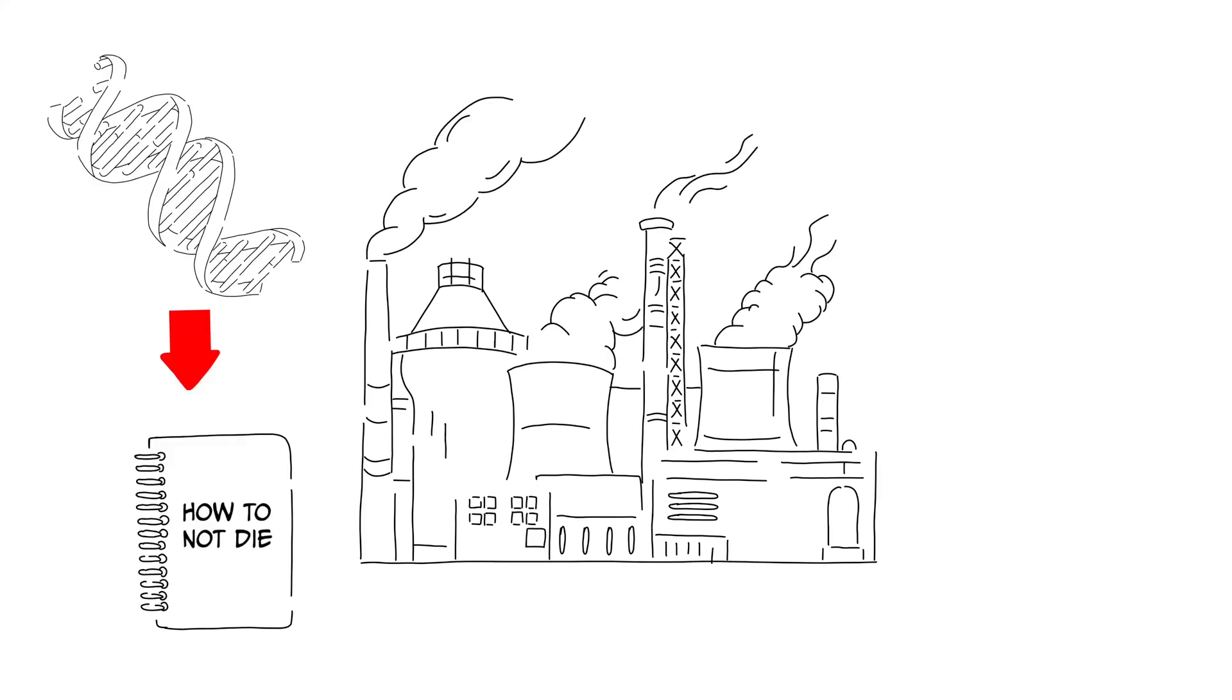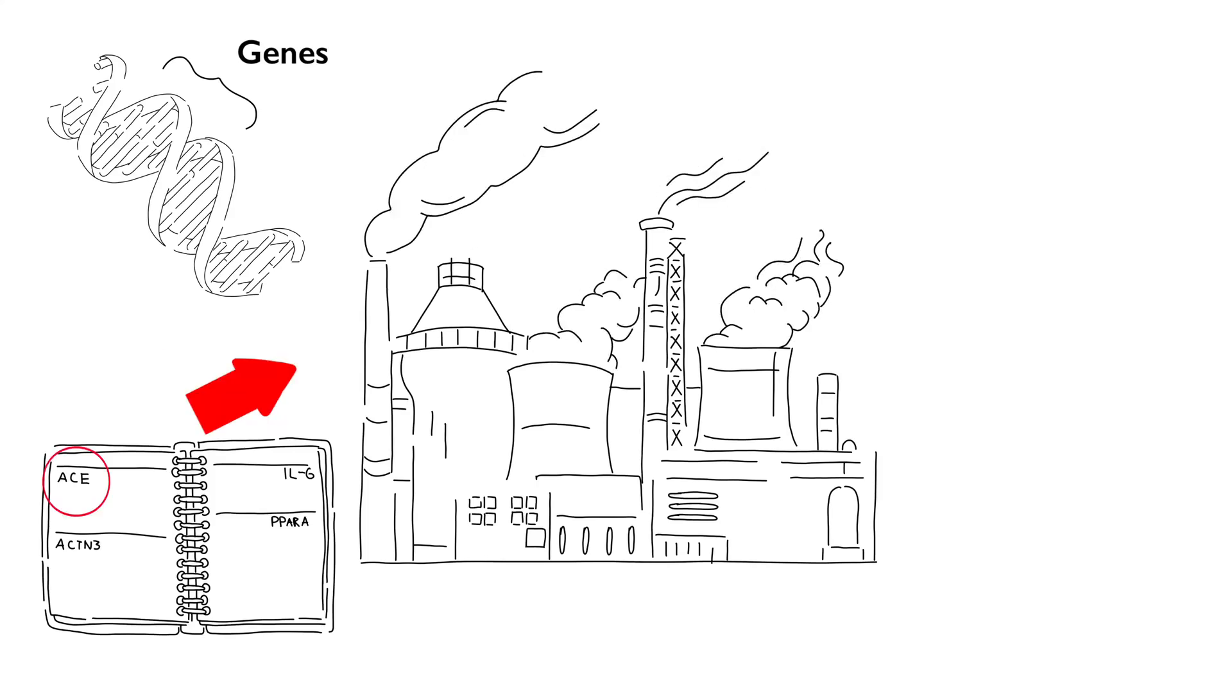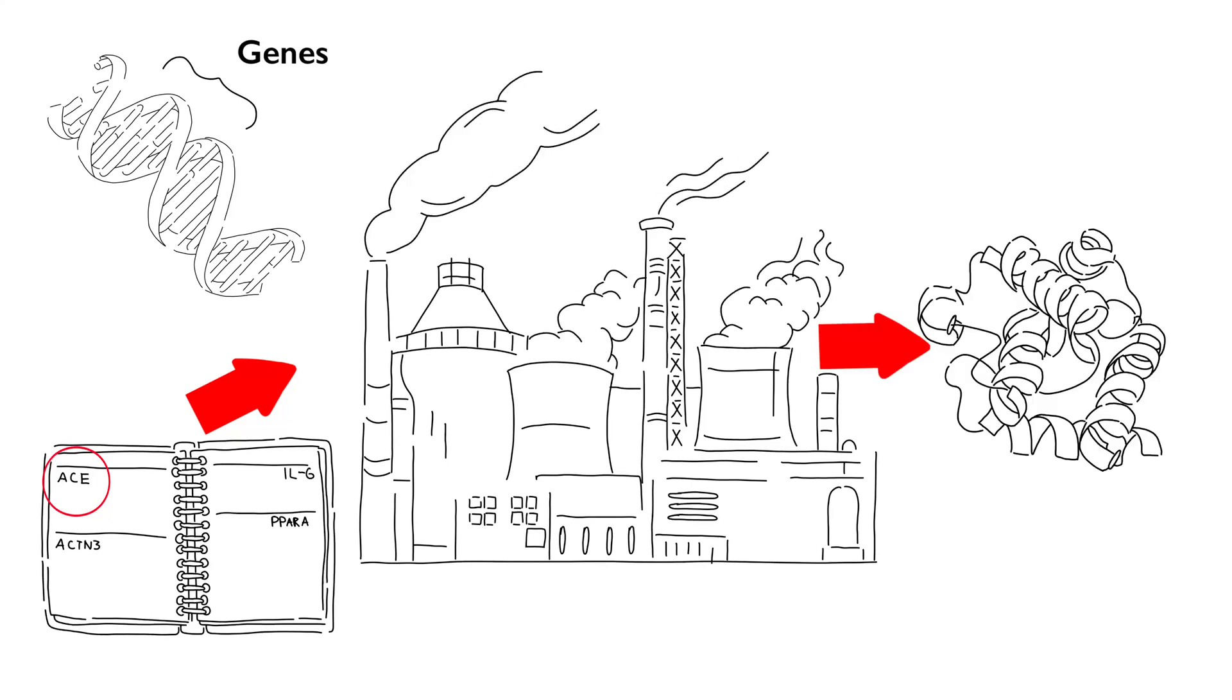Your body is like a factory. It uses your DNA as instructions for how the factory operates. Your genes are like a specific section of this manual, telling each part of the factory how to make specific products, or in this case, proteins.